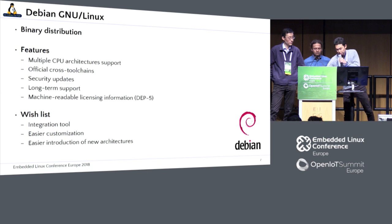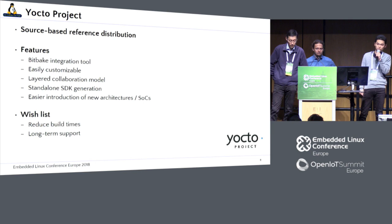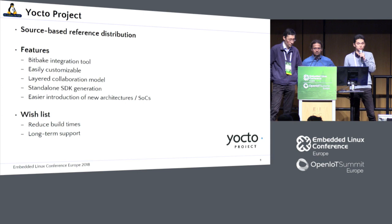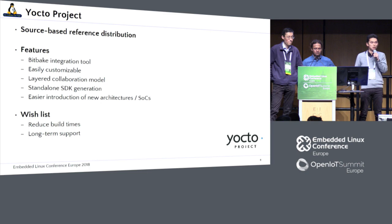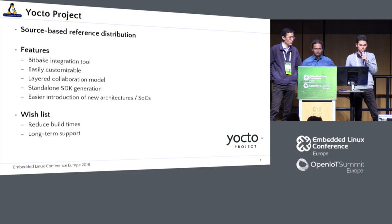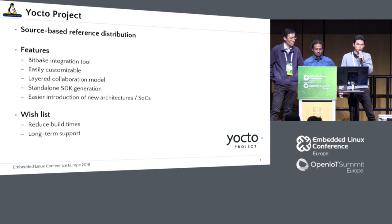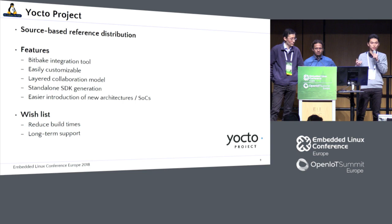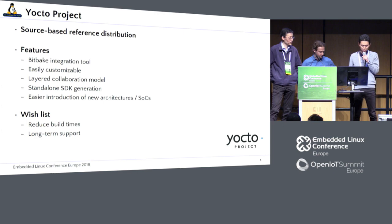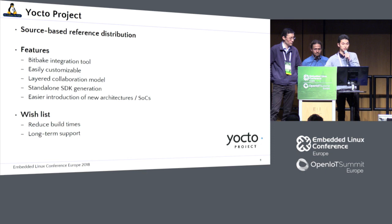The Yocto project is very famous in the embedded world today. It has a very strong integration tool, BitBake, and it's very flexible. We can modify everything by just modifying the recipes. The layering function is very useful, and standard SDK generation is also supported. New architectures are usually provided by SoC vendors' meta layers. But sometimes it takes very long time to generate images, and long-term support is also required if we apply it to product development.